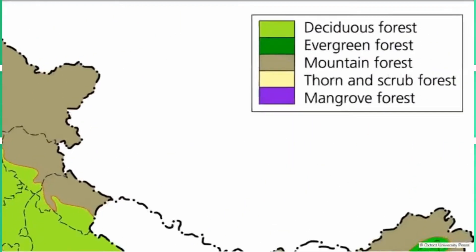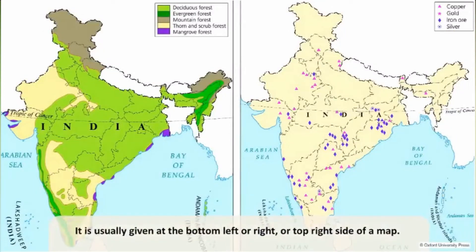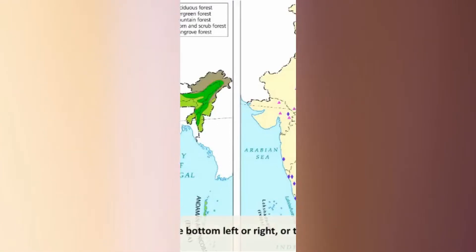You can see the key of the given map. A key or legend explains the meaning of the symbols or colors used on a map. It is usually given at the bottom left or right, or top right side of a map. Hope you all can understand a map much better.